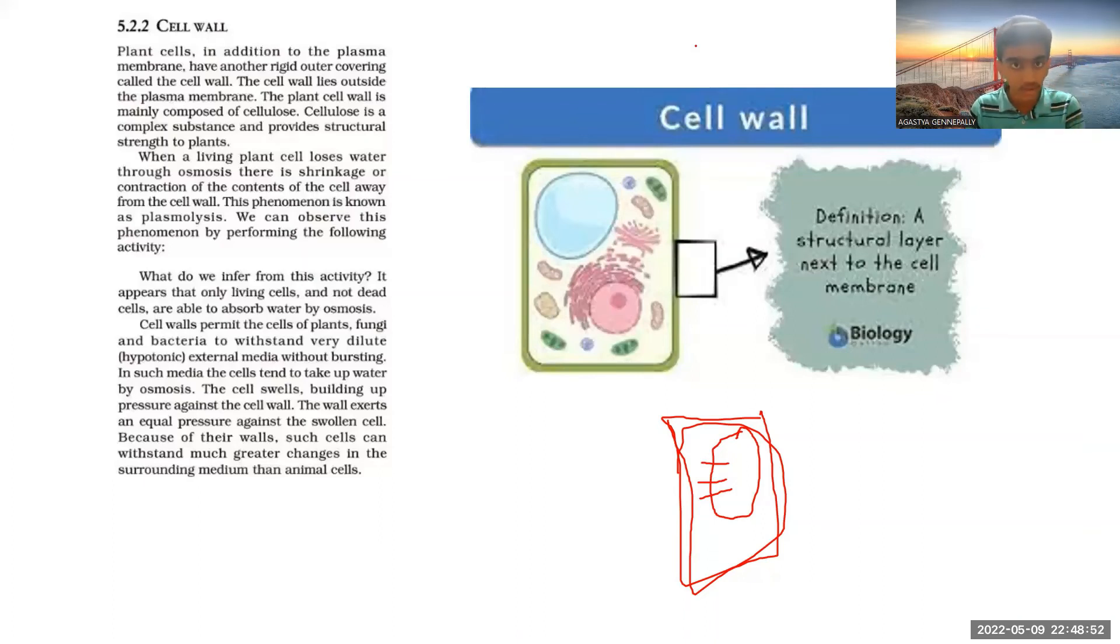It is made up of cellulose, which gives structural strength to plants. Plasmolysis occurs, and we learned how equal pressure is exerted to decrease the chances of bursting. So we understood what exactly the cell wall is. I hope you understood. Thank you, signing off Aghastya.